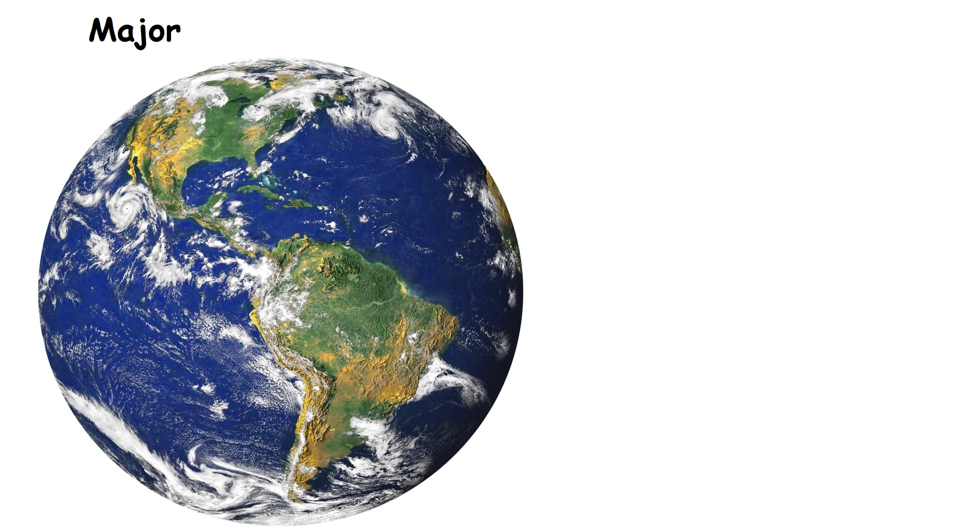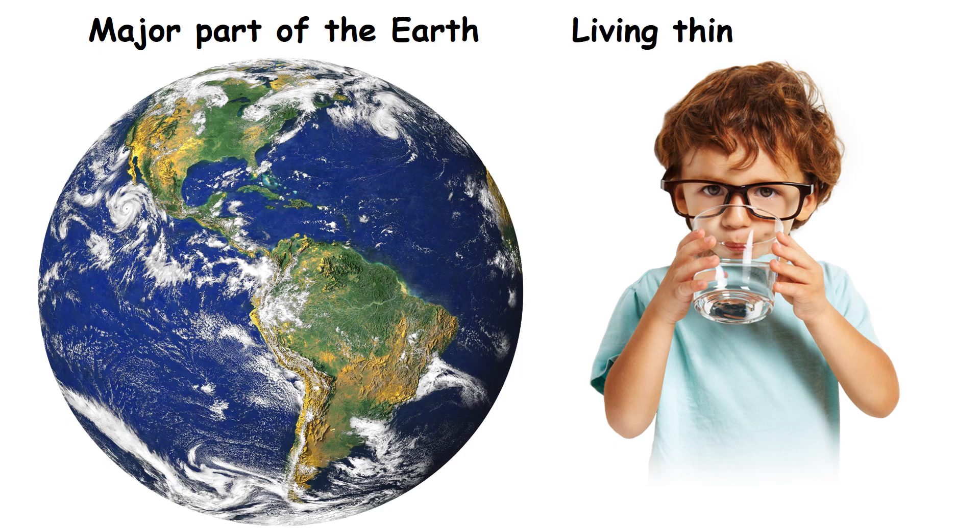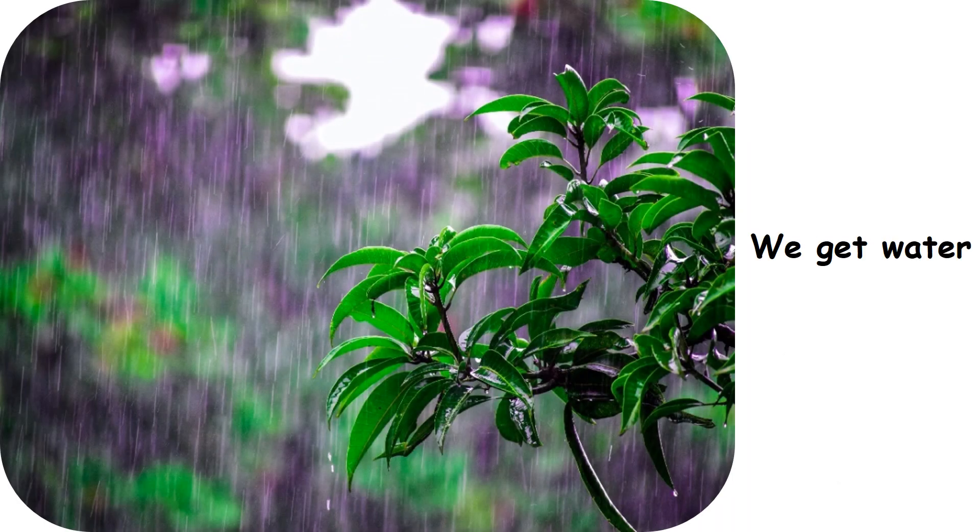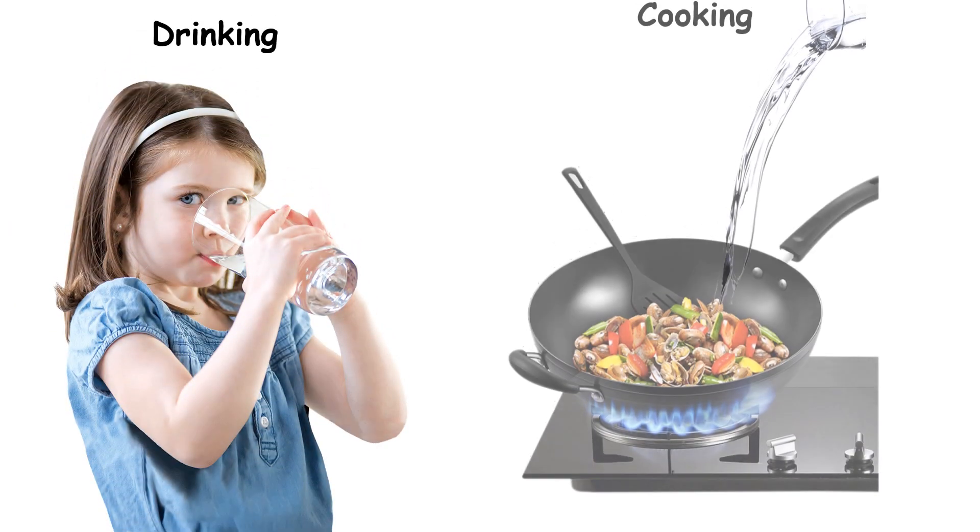Water. Water occupies a major part of the earth. All living things in the world need water to live. We get water from the rain. Water is used for drinking, cooking,